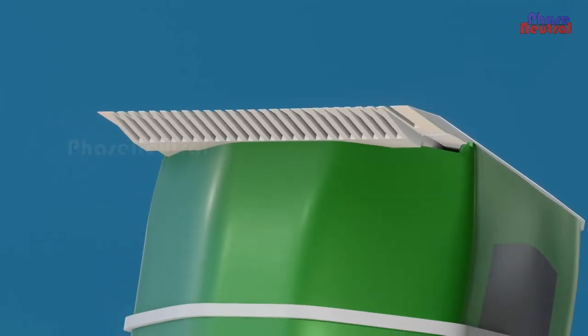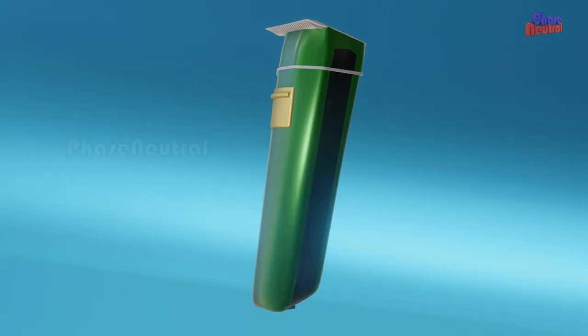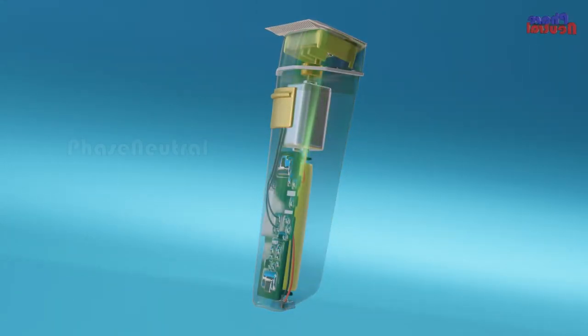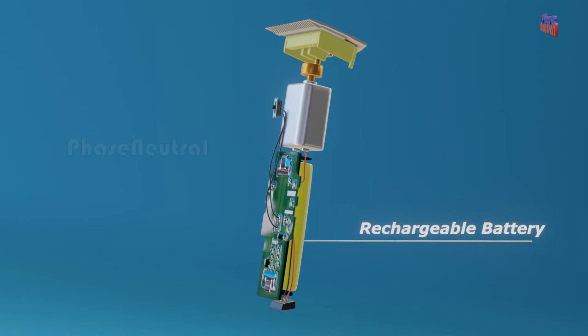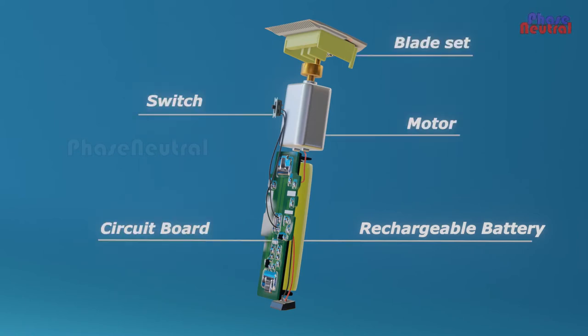The electric hair trimmer also uses this same working principle to cut the hair. Inside parts of electric hair trimmers are a rechargeable battery, motor, circuit board, switch, and blade set.